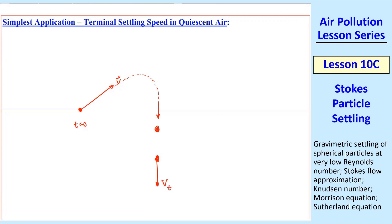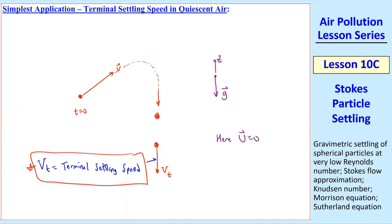That's a terminal settling speed of the particle, and this is the speed we want to calculate. I'm assuming here that gravity is down, and typically z is up, and here u is equal to 0. There's no airflow. It's quiescent air.